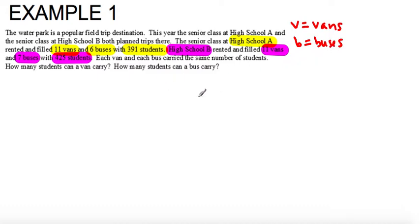So now I can write my equation down. The High School A equation consists of 11 vans, and means plus, so 11V plus 6 buses, so 6B, and the total is 391 students. Alright, and then High School B consists of 11 vans and 7 buses and a total of 425 students.